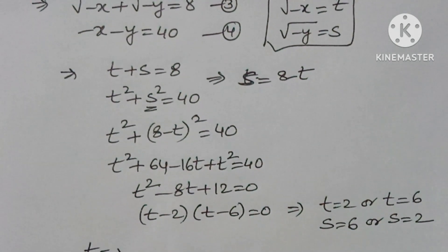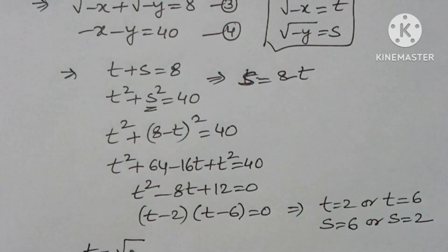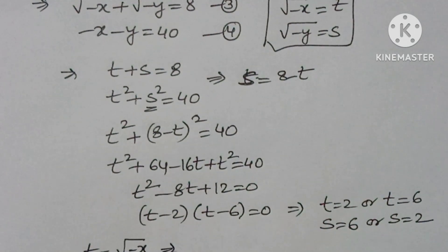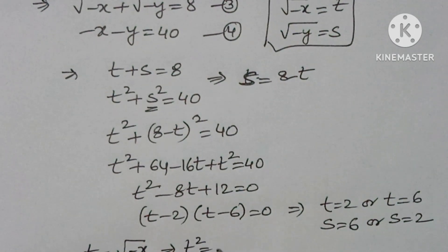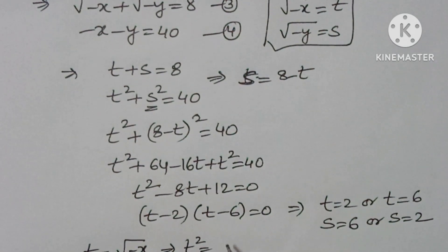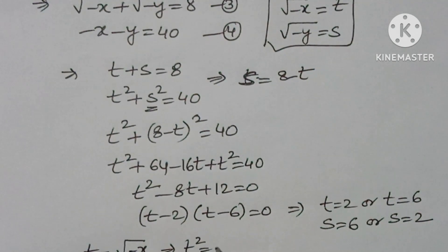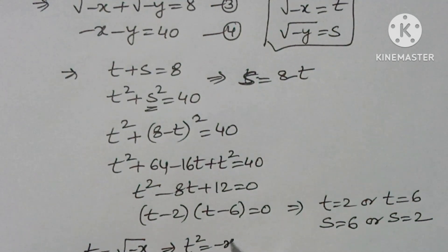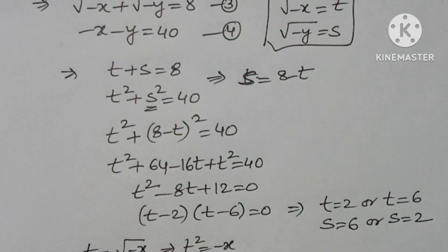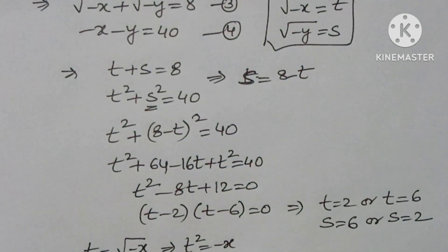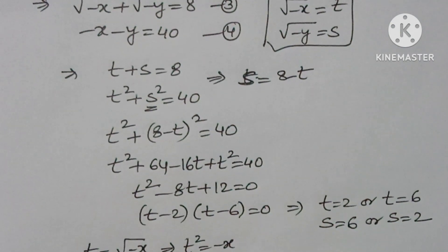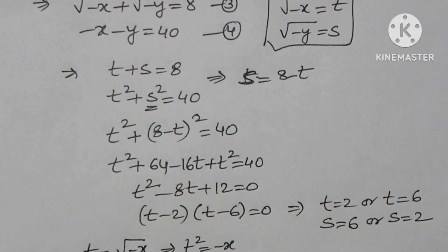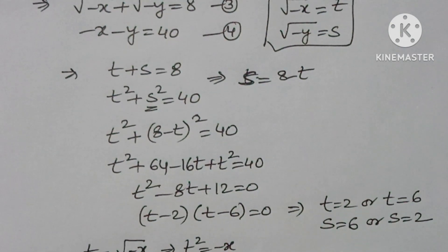Since t = √(−x), we have t² = −x, which means x = −t². Similarly, y = −s².